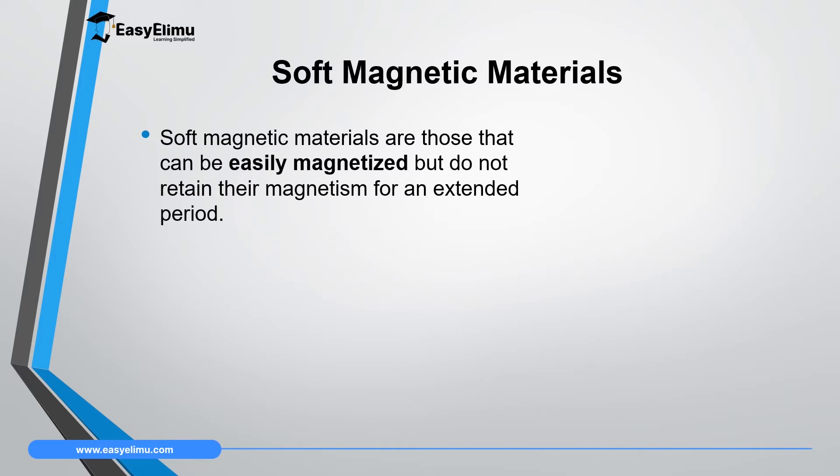Soft magnetic materials are materials that can be easily magnetized but they do not retain their magnetism for an extended period.